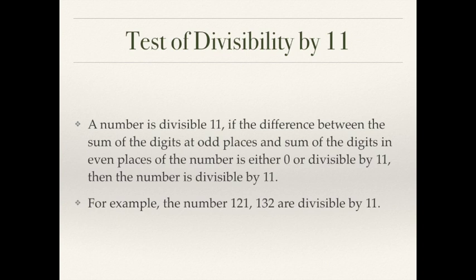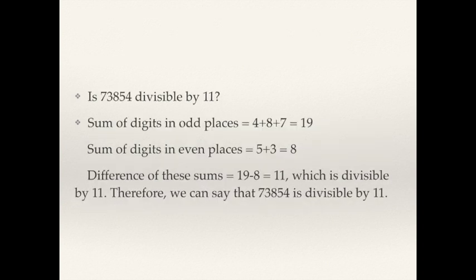Now the divisibility rule by 11: a number is divisible by 11 if the difference between the sum of the digits at the odd places and the sum of the digits at the even places is either 0 or divisible by 11. For example, numbers like 121 and 132 are divisible by 11. Take the large number 73,854: starting from the right, the digits in odd places (1st, 3rd, 5th) are 4, 8, and 7 — their sum is 19. The digits in even places are 5 and 3 — their sum is 8. The difference is 19 minus 8 equals 11, which is a multiple of 11, so 73,854 is divisible by 11.